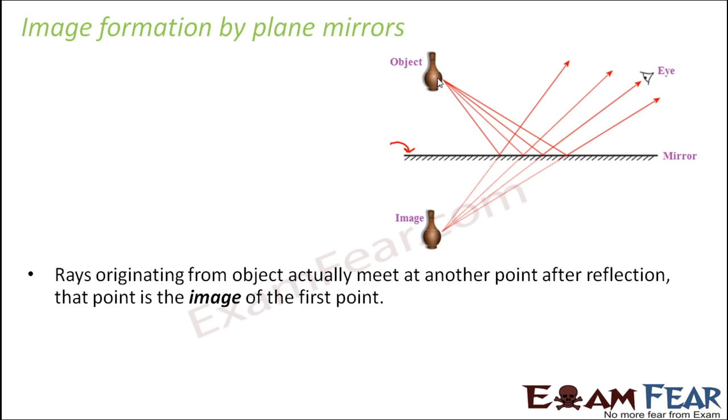Now the rays coming from this vase will fall on the mirror, correct? So these rays will be the incident rays because it is not a single ray which is falling on the mirror. A bunch of rays, a beam of light will be falling from the object to the mirror and once it strikes the mirror, each of these rays will undergo reflection and these are the reflected rays.